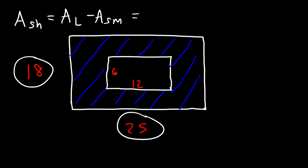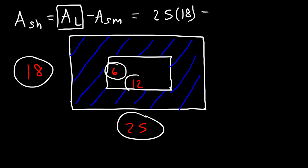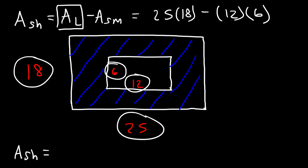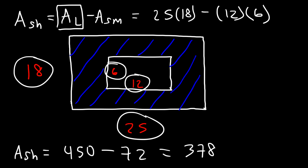The area of the large rectangle is 25 times 18, which is 450 square units. The area of the small rectangle is 12 times 6, which is 72. So 450 minus 72 equals 378 square units. That's how you calculate the area of a shaded region — it's the difference between the area of the large object minus the area of the small object.